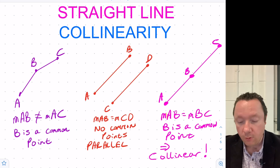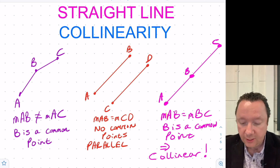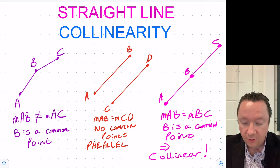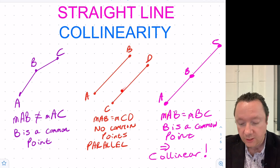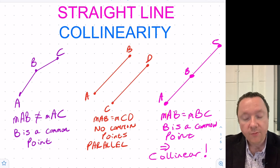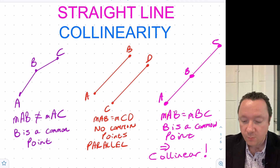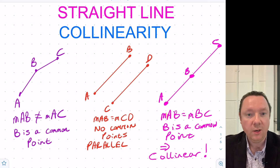Or I could draw four points — A, B, C and D — and make the gradient of A to B the same as the gradient of C to D. In other words, these lines are parallel because there's no point in common; they're separate lines.